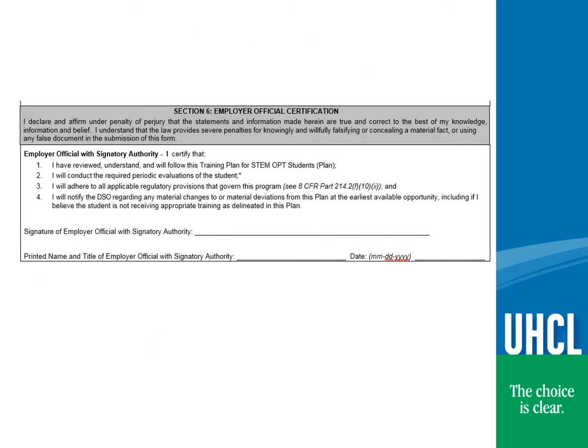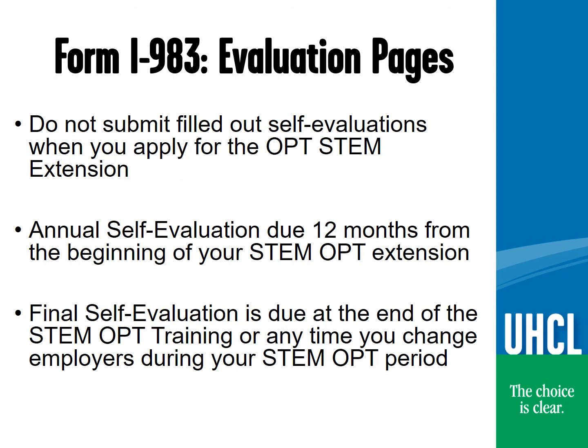Your employer will determine who can sign section 6. This may or may not be the same person as section 4. It should be someone who is familiar with your training plan and the person who is conducting your evaluations. Self-evaluations are due in one-year intervals — for example, one year after your STEM program has begun. It is not necessarily one year after you started with that employer, depending on how many changes have occurred in your employment history. You must also submit the final evaluation upon leaving an employer or at the end of your STEM period, whichever comes first. This means that you may submit multiple final evaluations over your OPT STEM period if you change your employer many times.